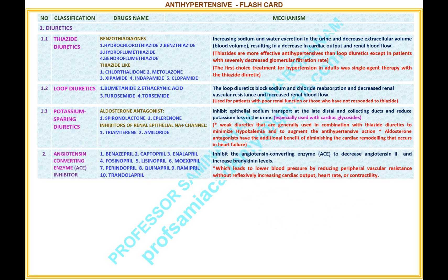Number 2: Angiotensin Converting Enzyme (ACE) inhibitors. Drugs: 1. Benazepril, 2. Captopril, 3. Enalapril, 4. Fosinopril, 5. Lisinopril, 6. Moexipril, 7. Perindopril, 8. Quinapril, 9. Ramipril, 10. Trandolapril. Mechanism: inhibit the angiotensin converting enzyme (ACE) to decrease angiotensin 2 and increase bradykinin levels. This leads to lower blood pressure by reducing peripheral vascular resistance without reflexively increasing cardiac output, heart rate, or contractility.